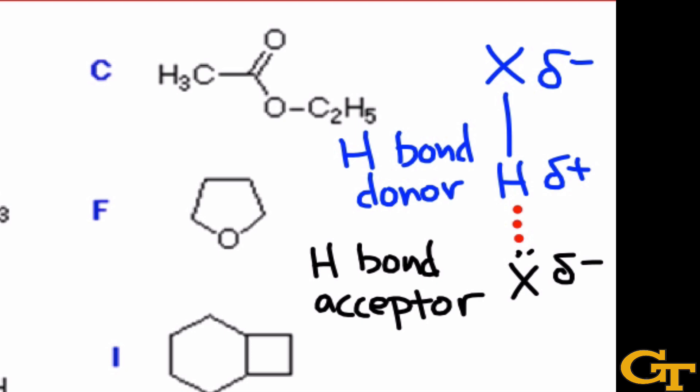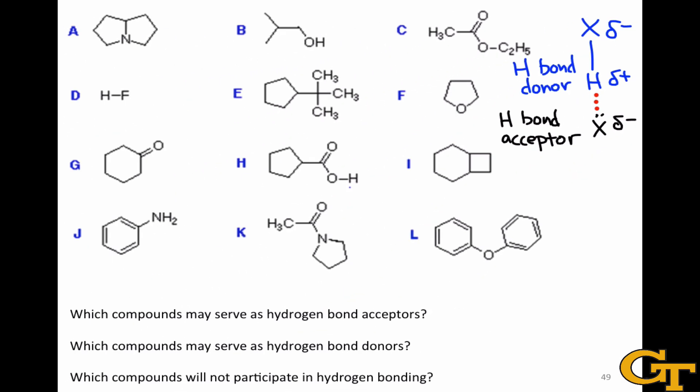Hydrogen bond acceptors must contain a heteroatom bearing a lone pair, and there are many cases — many of which we'll see in these examples — where a molecule can serve as a hydrogen bond acceptor but not as a hydrogen bond donor, because all of its heteroatoms are bonded to either other heteroatoms or to carbon. So let's go through each of these molecules and determine whether each can act as a hydrogen bond acceptor or hydrogen bond donor.